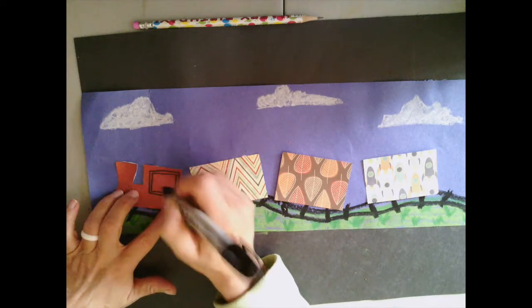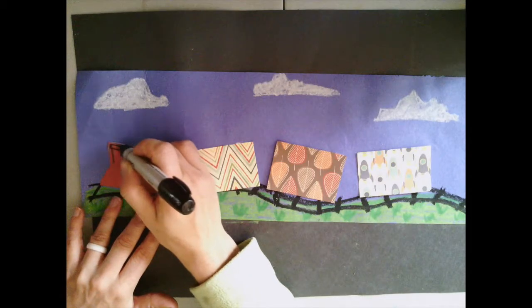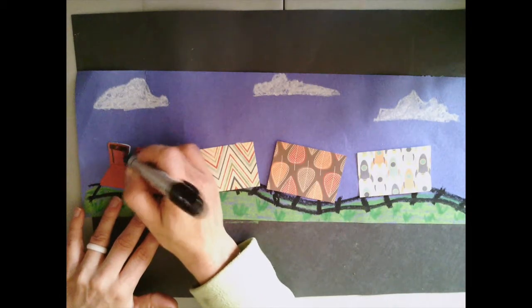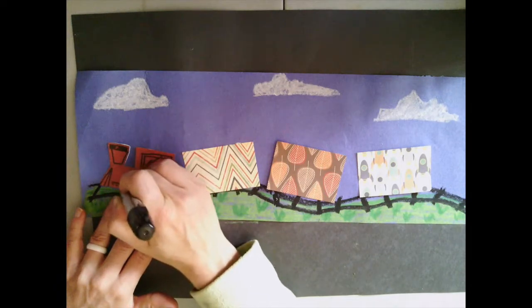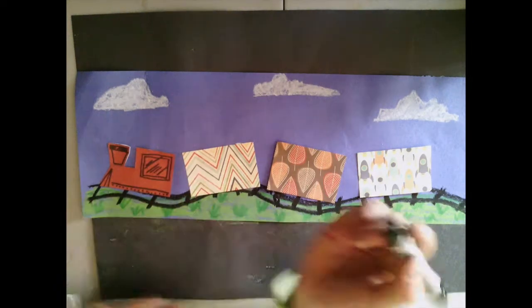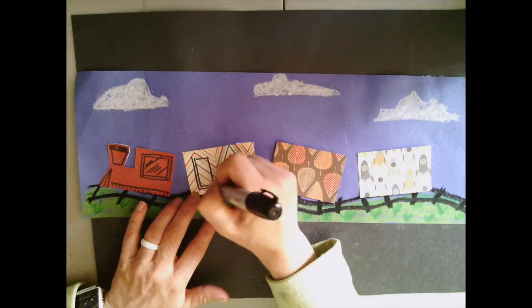I'm going to grab a Sharpie real quick and start making the window, the stack for where my train has the clouds or the smoke that comes out, the front part of the car, and then maybe just a few more details. That looks a lot more like a train now than what it used to.